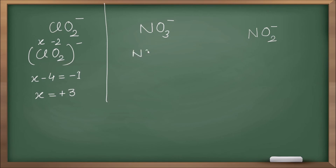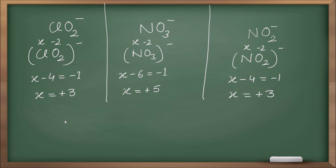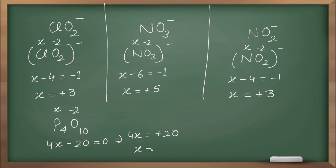For NO3⁻: let nitrogen = x. So: x + 3(−2) = −1, x − 6 = −1, x = plus five. For NO2⁻: x + 2(−2) = −1, x − 4 = −1, x = plus three. For P4O10: let phosphorus = x. So: 4x + 10(−2) = 0, 4x − 20 = 0, 4x = plus twenty, x = plus five.